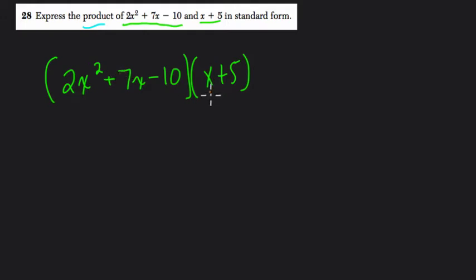So what I mean is I take x and distribute it to each term here, then write those products out. x times negative 10 is negative 10x. Let me go in order: x times 7x is 7x squared. And then x times 2x squared is 2x cubed.